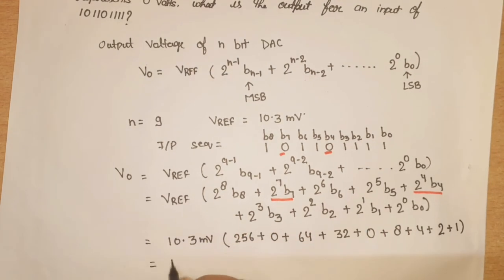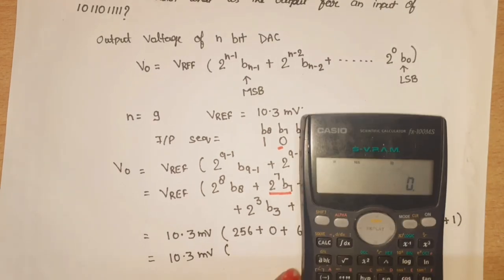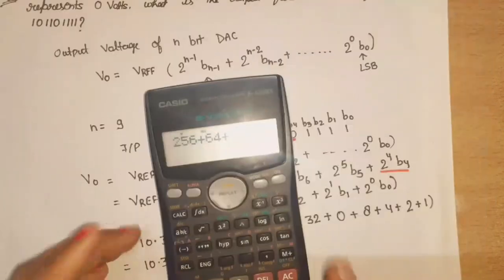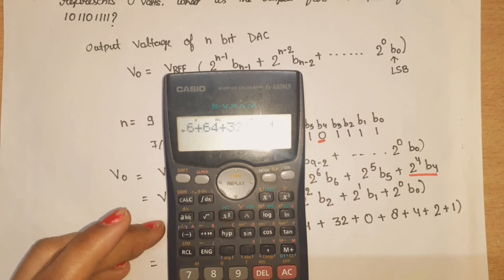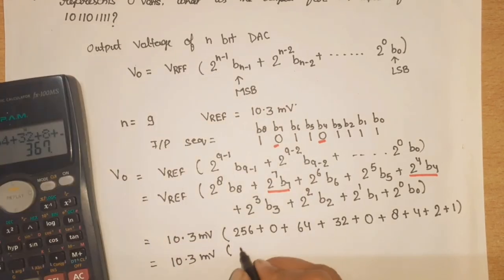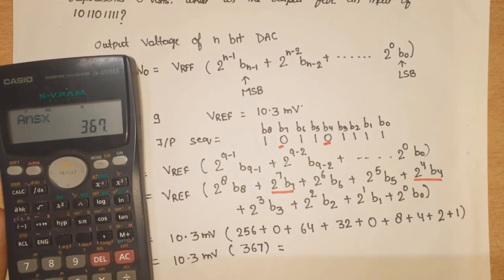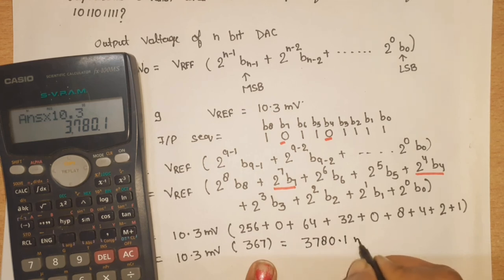Now we will total all of these. This value that we have is equal to 256 plus 64 plus 32 plus 8 plus 4 plus 2 plus 1 equals 367. We'll multiply this with V reference, so the value we got here is 3780.1 millivolt.